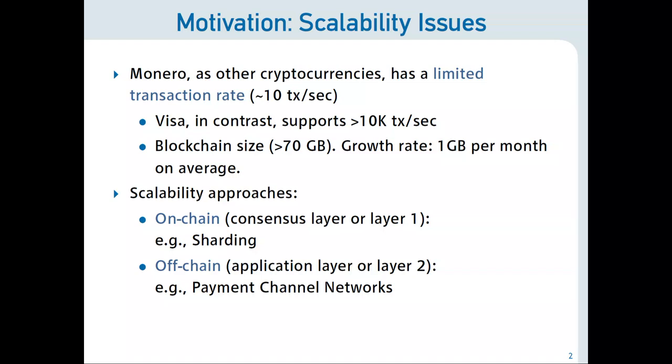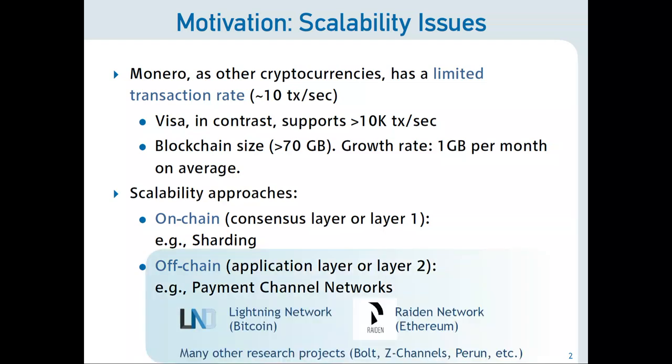The second group, which is the one I'm going to focus on, is called off-chain, application layer, layer 2, or payment channels. I'm interested in this because it's a technique that has been shown useful in other blockchains and cryptocurrencies. For example, we have the Lightning Network in Bitcoin, the Raiden Network in Ethereum, and there are also other research efforts like the Bolt Network, C-channels in Perun, and many others. So the question is, why don't we research the idea of having payment channel networks in Monero itself?